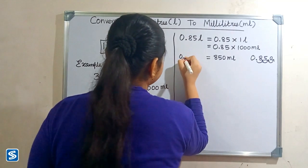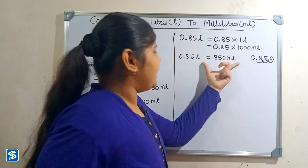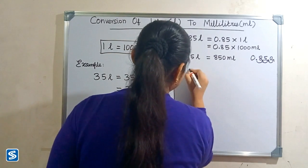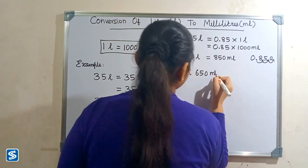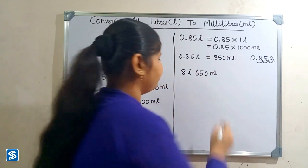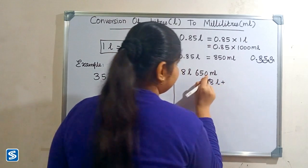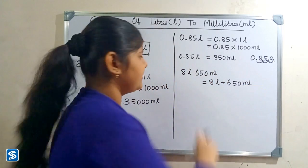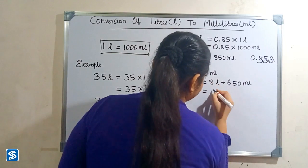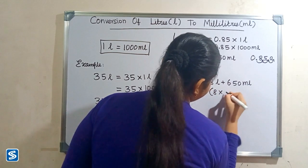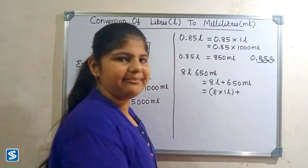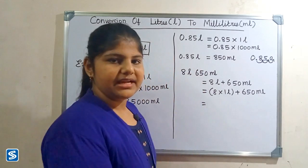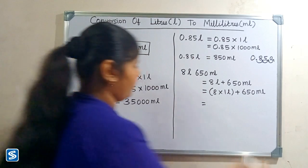So 0.85 liters is equal to 850 milliliters. Next we will take one more example: 8 liters 650 milliliters. 8 liters 650 milliliters will be 8 liters plus 650 milliliters. 8 liters can be written as 8 multiply one liter plus 650 milliliters. Now we have to substitute 1000 milliliters in the place of one liter.